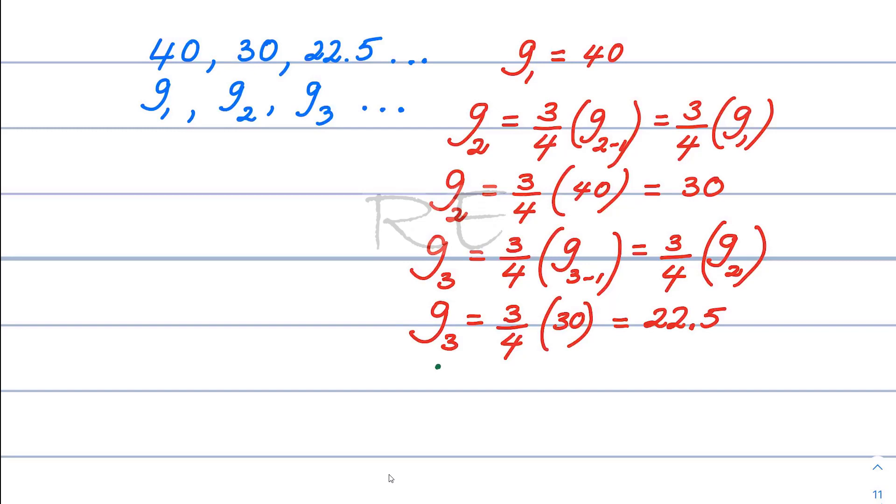which is 22.5. Now gn, if we call the number n, will be 3 fourths of gn minus 1.